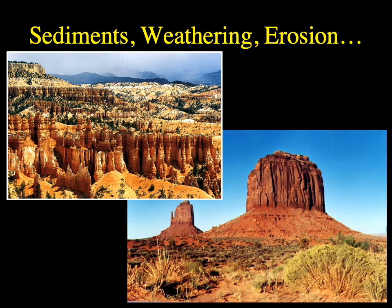During our discussion of the rock cycle, we discussed the three different main types of rocks: igneous rocks, metamorphic rocks, and sedimentary rocks. The process by which we make sediments, which we can then glue back together to make sedimentary rocks, is called weathering and erosion.